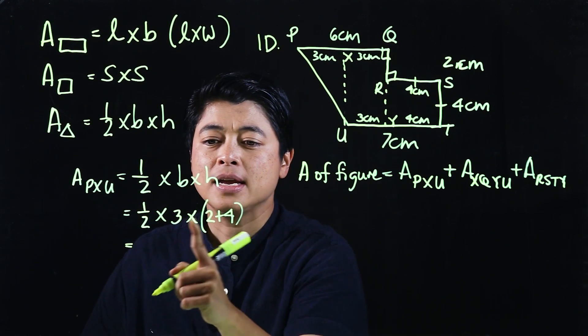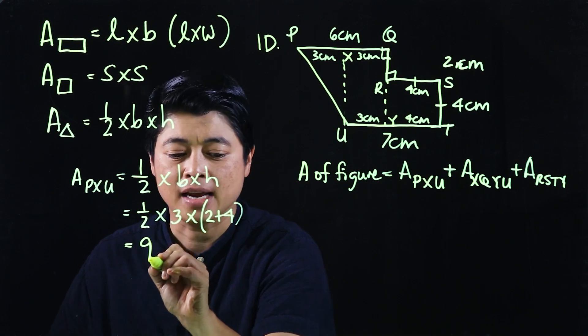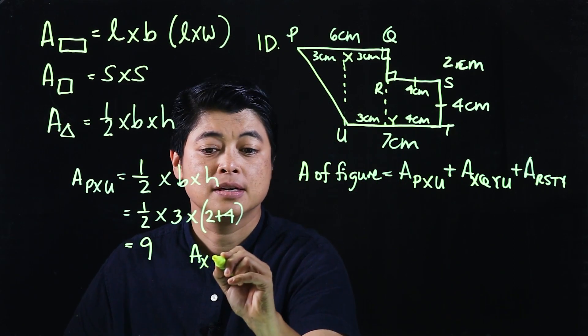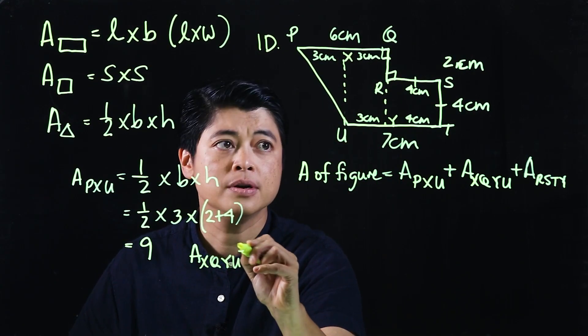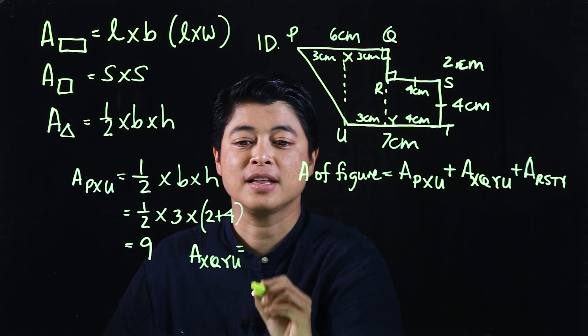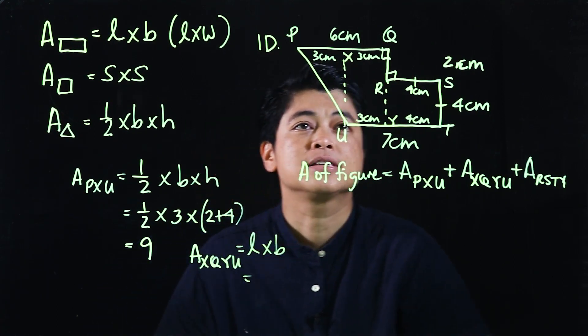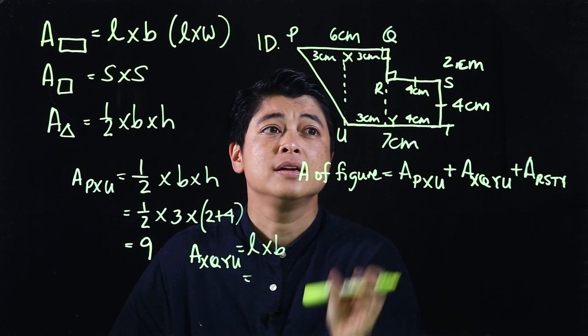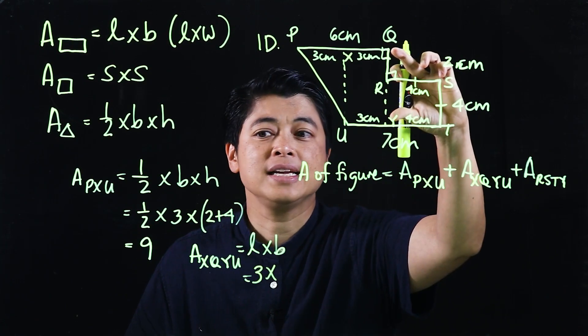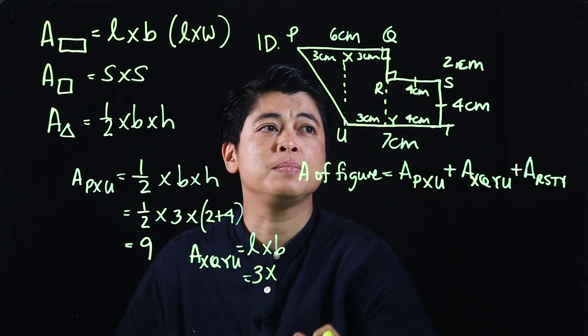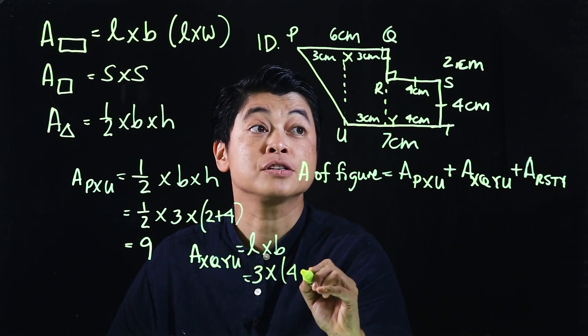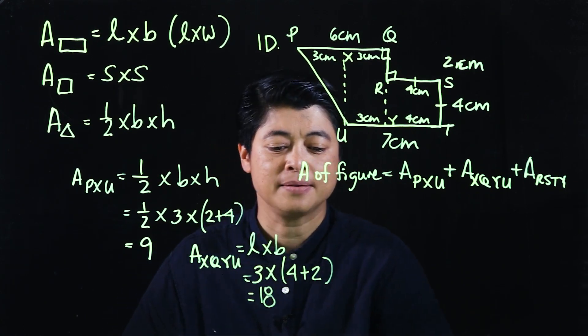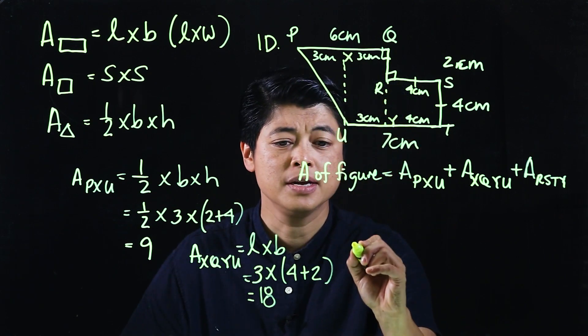Looking at the next figure, area of XQYU, this would be a rectangle, so that means length times breadth. This would be the length, that will be the breadth, but it doesn't make a difference because we're multiplying anyway. This is 3, this is 4 plus 2, so 4 plus 2 is 6. 6 times 3 makes it 18.